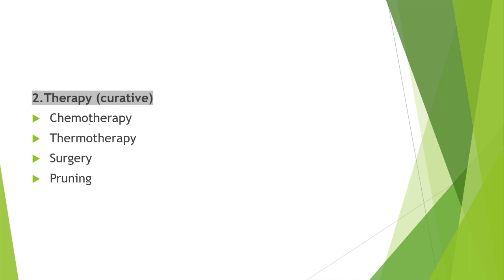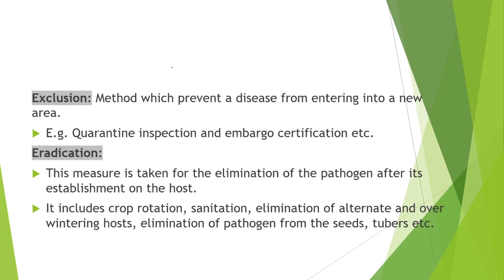Exclusion means a method which prevents a disease from entering into a new area. For example, quarantine inspection and embargo certification. Whenever agricultural products are exported and imported, quarantine inspection is done so that diseases do not spread to other countries.